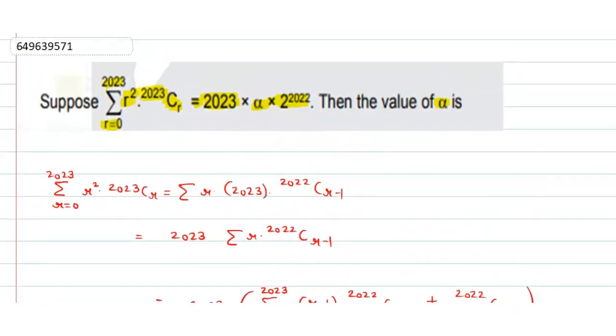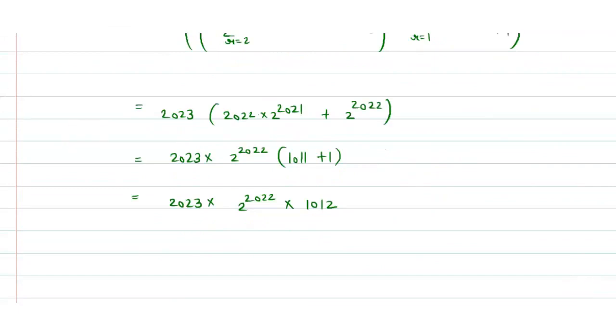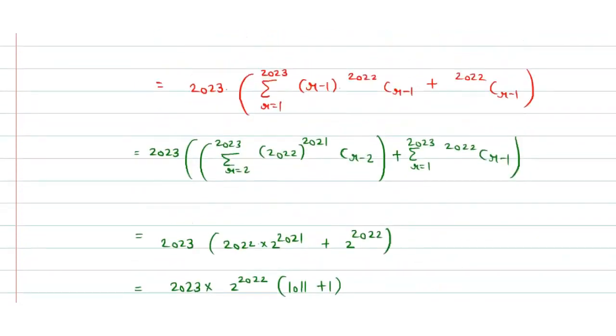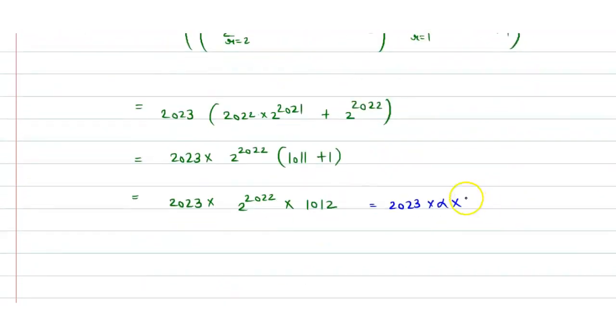It is equal to 2023 times alpha times, here we can say alpha times 2 to the power 2022. So what we can state, this term will be cancelled out, this term will be also cancelled out. So what we will get? Alpha is equal to 1012.